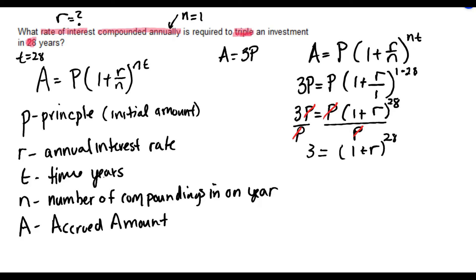On the right, I'll have 1 plus R to the 28th. Now to solve this, I could take the 28th root of both sides.